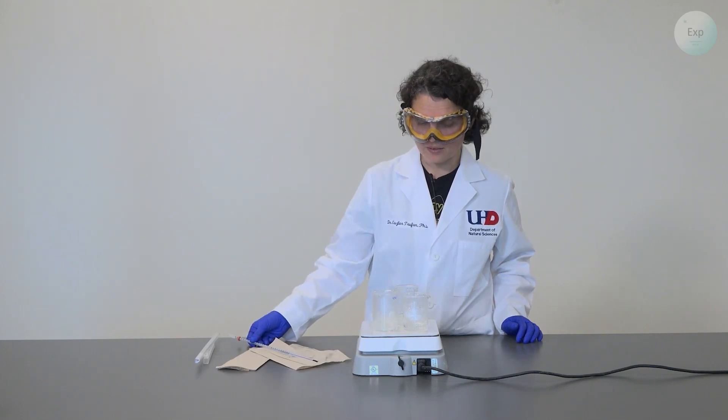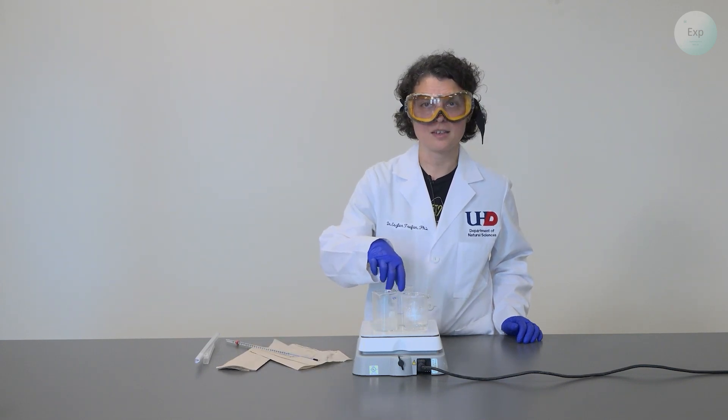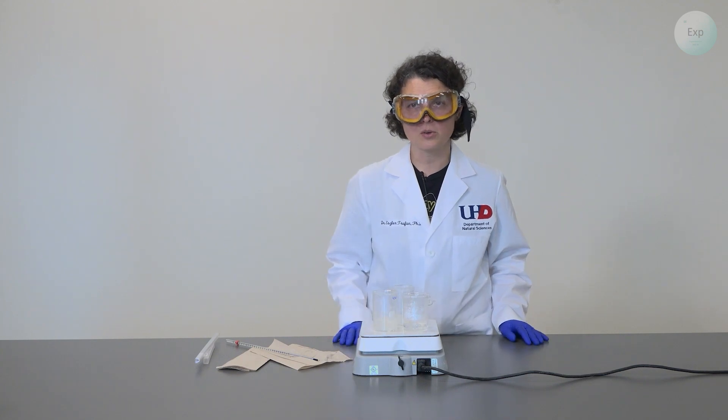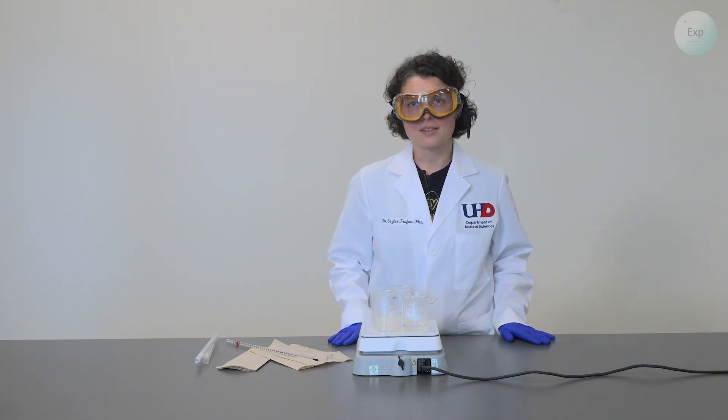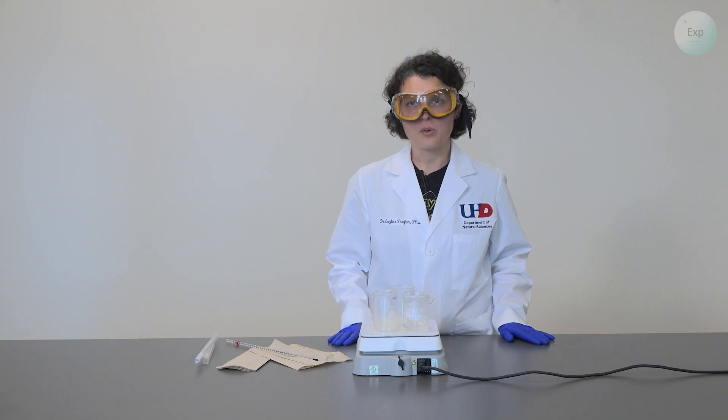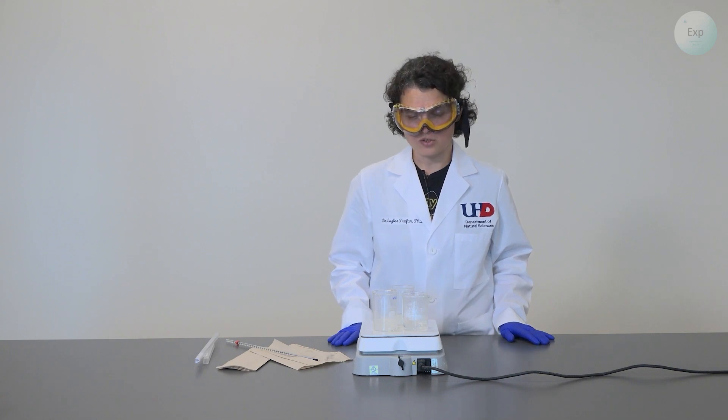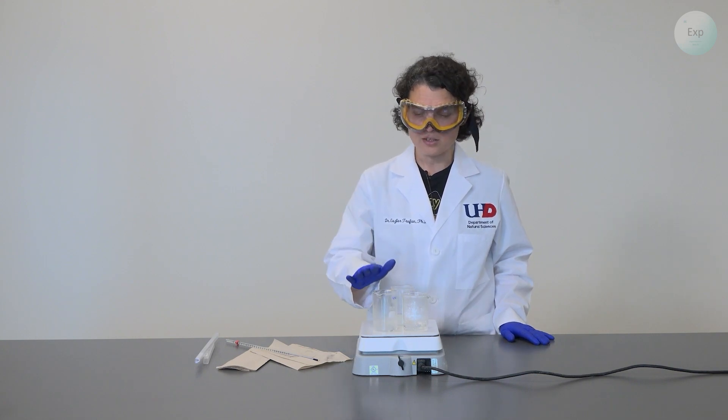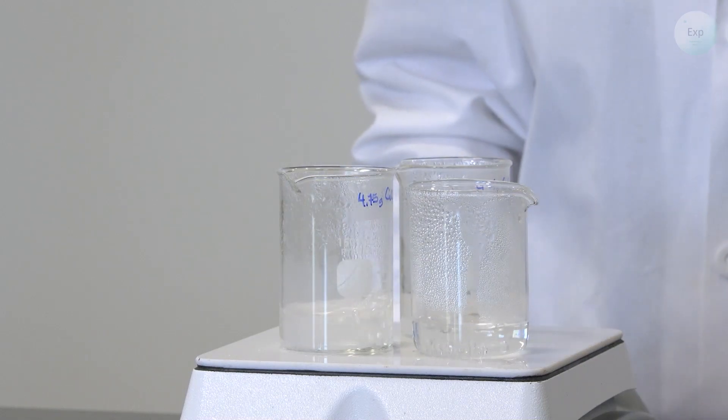We will do the same thing with the solution that contains the 9.5 grams of calcium chloride. We will record its boiling point and then we will proceed with our calculations to determine how the addition of the different amounts of calcium chloride have impacted the boiling point of water.